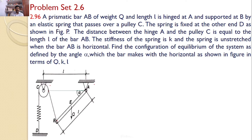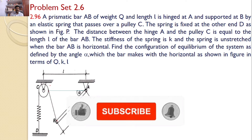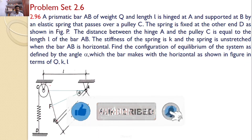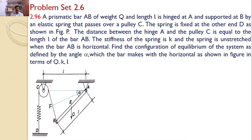Let us do a small construction. This is the initial position of the bar, and the bar now makes an angle alpha — the prismatic bar AB is deflected by angle alpha. Let us construct a perpendicular bisector AF. Since it is a perpendicular bisector, this angle equals this angle — that is alpha by 2 and alpha by 2 — and this distance CF equals this distance FB.